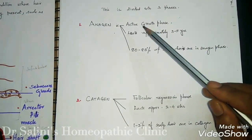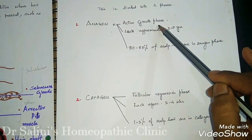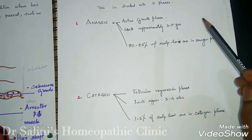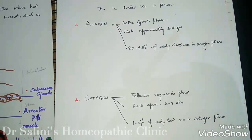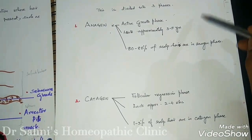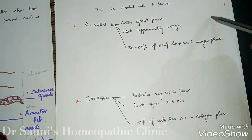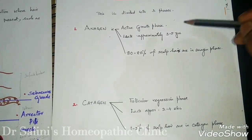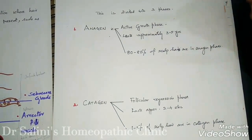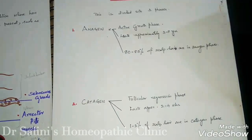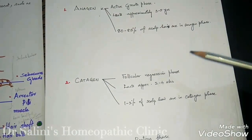Anagen means the active growth phase, which lasts approximately three to five years. At any given time, scalp hair would have 80 to 85 percent in this phase — that is, in the anagen phase where the hair is actively growing. This is then followed by the catagen phase, which is the follicular regression phase.